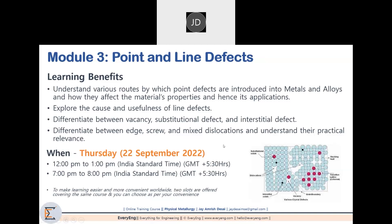The third module is on Point and Line Defects. The focus is to understand the various routes by which point defects are introduced into metals and alloys, and how they affect material properties and hence applications. We will also see the cause and usefulness of line defects, and differentiate between vacancy, substitutional defect and interstitial defect. We will also differentiate between edge, screw and mixed dislocations, and discuss their practical relevance. This is on Thursday, 22 September 2022, at 12 p.m. to 1 p.m. and 7 p.m. to 8 p.m.